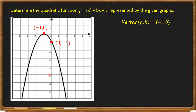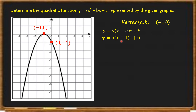Using these two pieces of information, we have the vertex h comma k, where h equals negative one and k equals zero. The vertex form is y equals a times the quantity x minus h squared plus k. Substituting the vertex values: y equals a times (x plus one) squared plus zero. The reason it becomes plus one is because the formula has minus h, and minus negative one equals positive one. So we have y equals a times (x plus one) squared plus zero.